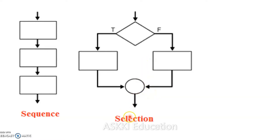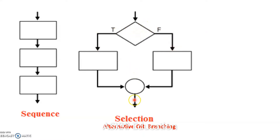The second one is selection. Why do we call it selection? Based on some condition, we will select either one side of the branching. We call this alternative or branching control structure. Based on the condition, we take one side of the branch; if the condition is false, the control goes to the other side. We call this the selection statement.